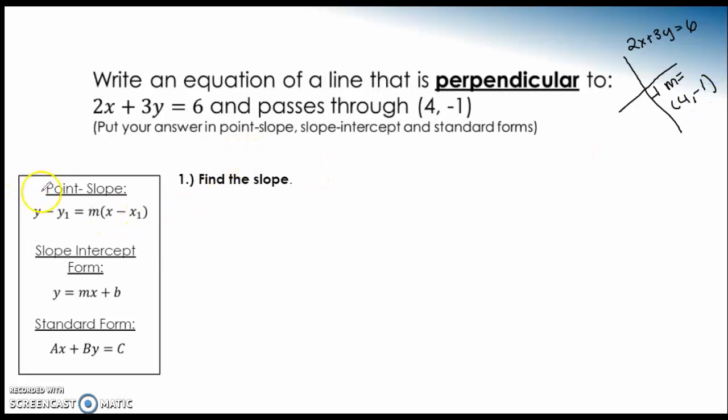So remember, you can always go from point slope to slope intercept to standard. We want to put it in point slope form first. But remember, that requires our point, which we actually have. The 4 is our x1. The negative 1 is our y1.